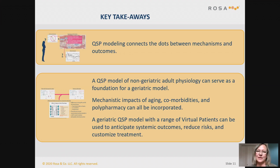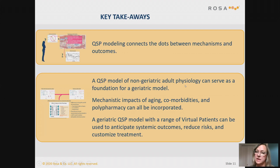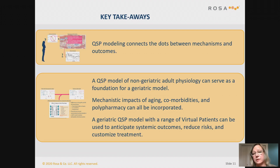The key takeaways from this high-level overview are that mechanistic modeling helps connect the dots between mechanisms and outcomes. It allows us to bring in additional information we already know about the geriatric population. You can use non-geriatric adult physiology as a baseline and then layer on additional information for the geriatric population, incorporating effects of aging, comorbidities, and polypharmacy. That geriatric model could then be used to better anticipate systemic outcomes in different types of geriatric patients, helping reduce risk and potentially customize treatment based on key attributes in those populations.